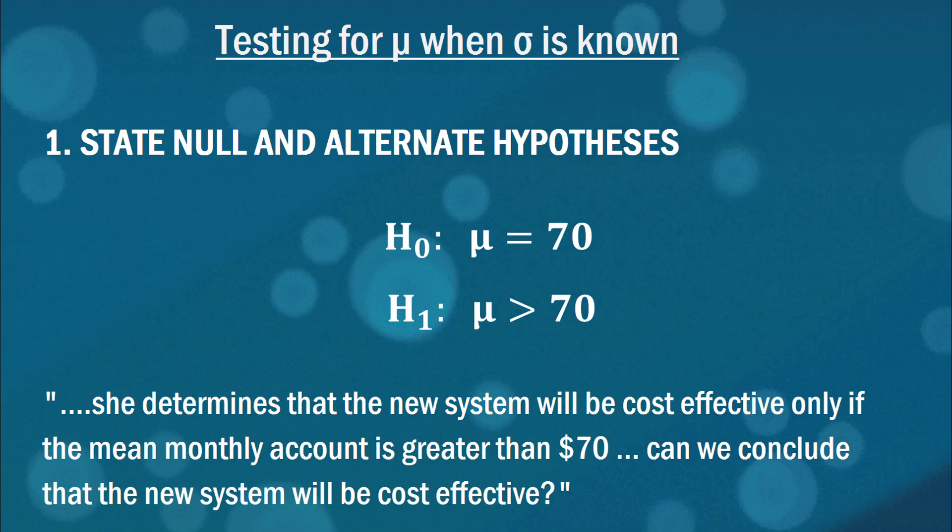Now why is that? Well, if we're seeking evidence for something but start with that as our null hypothesis, the mere fact that we can't reject that null hypothesis is not a very strong statement, is it? So rather what we do, if we're trying to seek evidence that the mean is greater than 70, is start with the assumption that it's not greater than 70. Let's start with the assumption or the hypothesis that it is in fact exactly equal to 70, and let's see if we've got the information to reject that. And in doing so, we'd make a very strong statement in favor of it being greater than $70. So hopefully you can see then that whatever we seek evidence for needs to be in the alternate hypothesis.